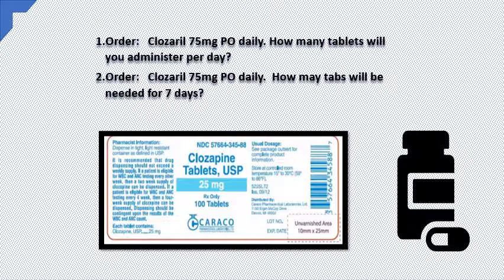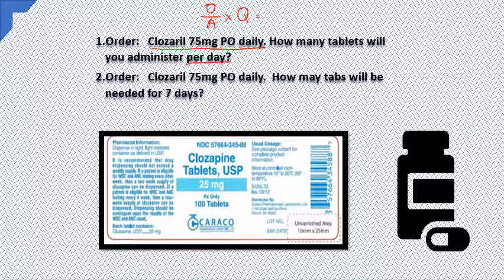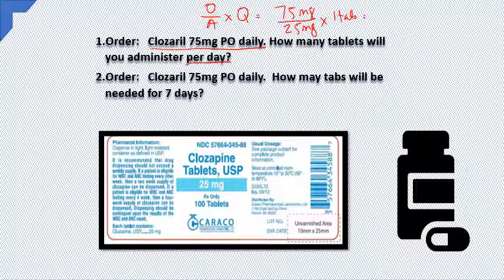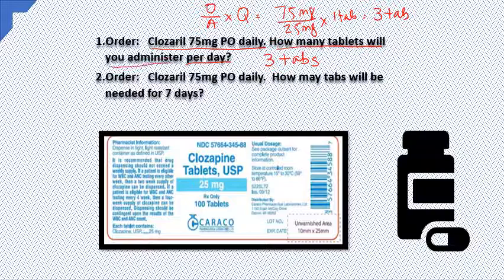Order: Closarol 75 mg PO daily — how many tablets will you administer per day? Using order over availability times quantity: order is 75 mg, availability is 25 mg per tab. Divide 75 by 25 and you get 3. The answer is 3 tablets daily. Even though the question says 'tablets,' you still need to include the units in your answer.